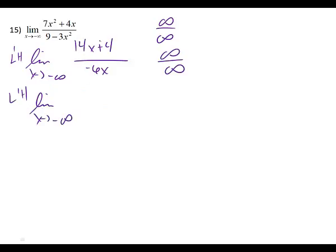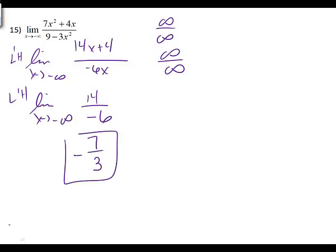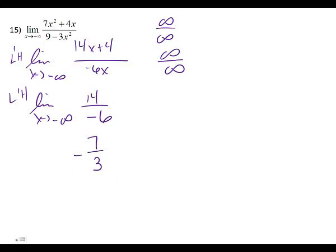What's the derivative of the top? Fourteen. And what's the derivative of the bottom? Negative six. So you end up with negative seven over three. Negative seven over three is your limit. Don't box it. Wait, that's like an answer. That's it. So box it? I won't mark it wrong if you box it.